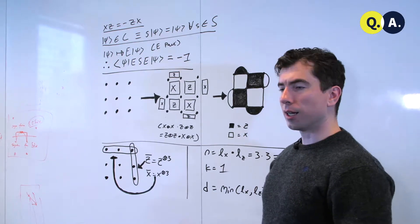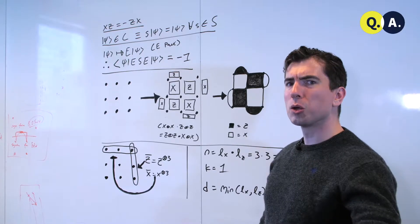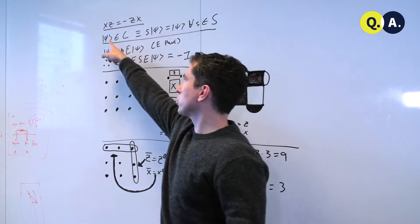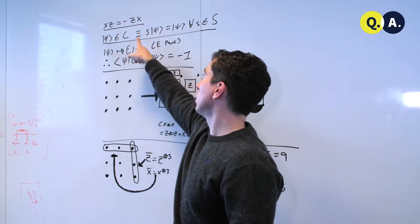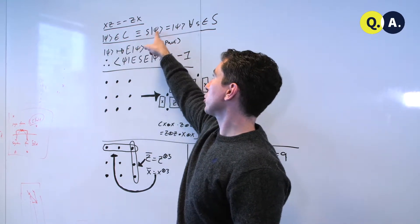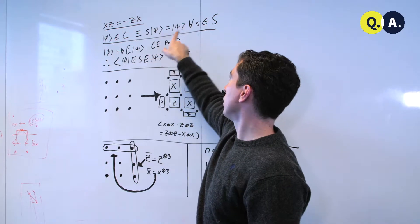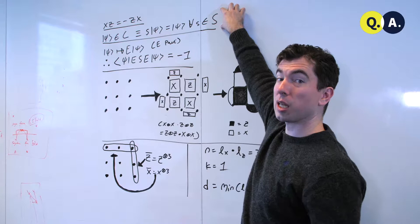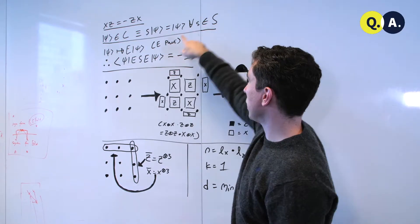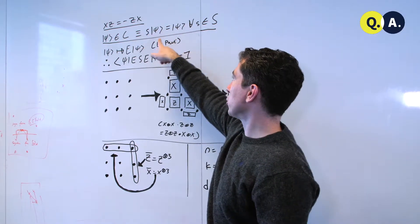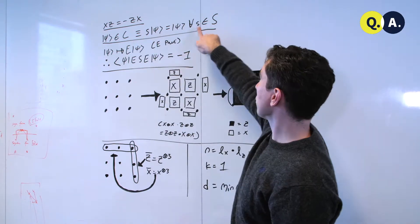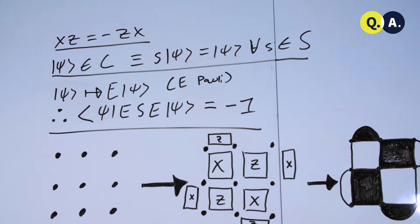We can define stabilizer codes to be a set of code states psi in the code C such that s times psi is equal to psi for every operator s in a big S, which is a set of stabilizer operators. So we say that s stabilizes psi because psi is the plus 1 eigenstate of s for all of the little s's in this big group of s's.